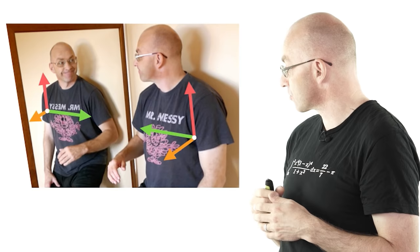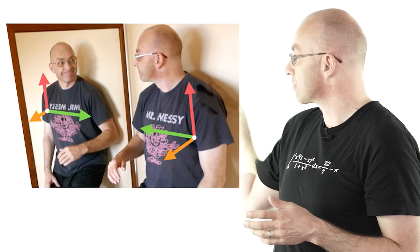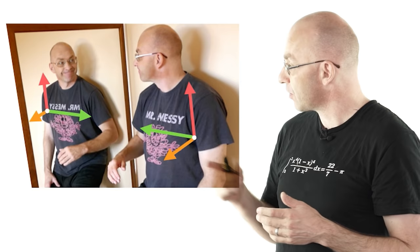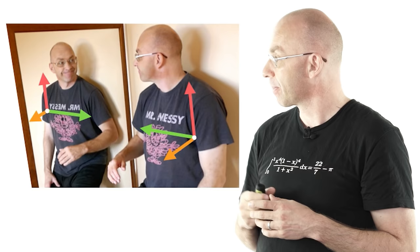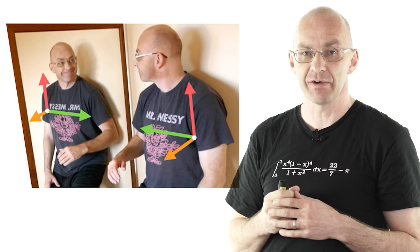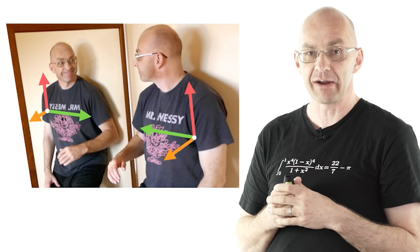Left and right doesn't get flipped. Well, that's reflected by these two arrows here going in the same direction. Up and down don't get flipped. That corresponds to these two red arrows going in the same direction. But what happens to the green arrow? The green arrow that's kind of pointing towards the mirror, the reflection is actually pointing in the opposite direction. So in terms of 3D objects like myself, the 3D mirror image is actually only inverted in the direction of the green arrow. That's how I turn myself into my mirror image.